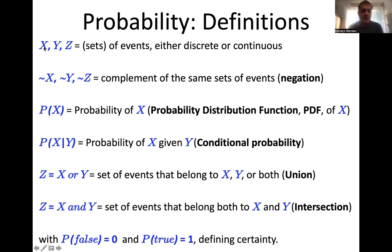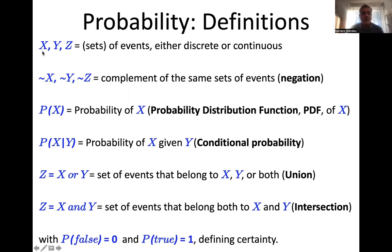For instance, this could be the result of throwing a die — one to six — or taking a card from a deck, or more suitable to your needs, this could be the number of photons that you count in a given detector in a given energy channel, or the number of photons that you detect in all the energy channels of your spectrum for a source. You can also call the complement of the same set of events.